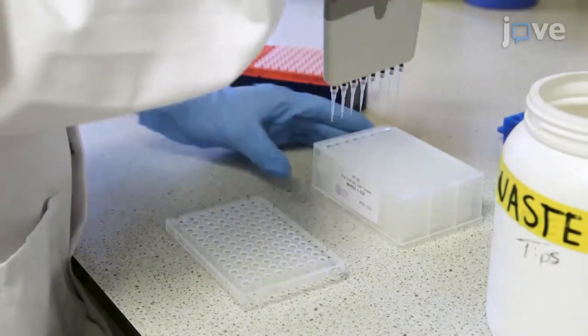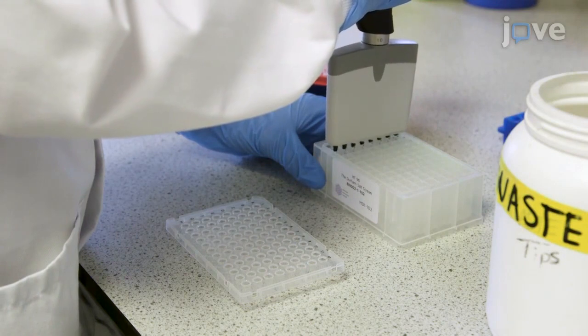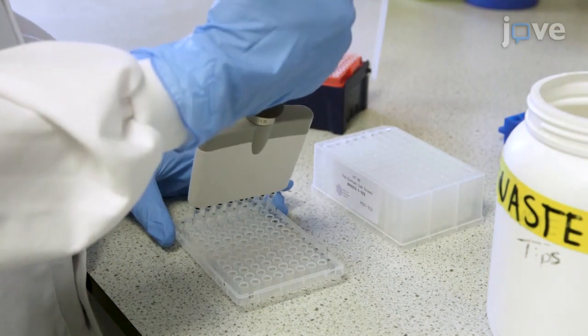To prepare the protein sample, transfer 10 microliters of each condition of a stability screen into the corresponding well of a 96-well plate using a multi-channel pipette to save time.